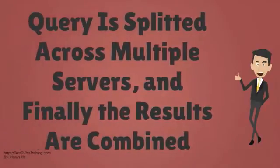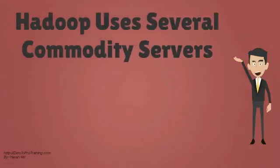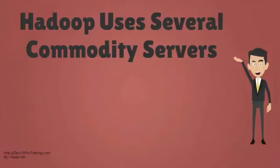In other words, instead of executing the query against a single server, it is split across multiple servers and finally the results are combined. The end result is the faster execution of the query. Instead of using one powerful server, Hadoop uses several less expensive machines called commodity servers.